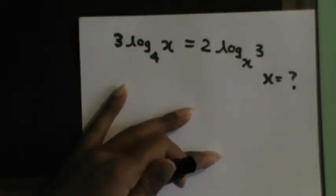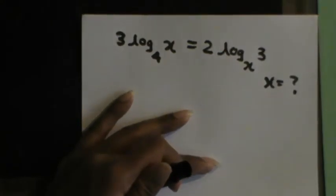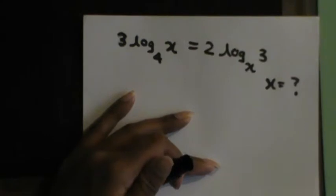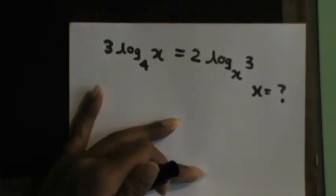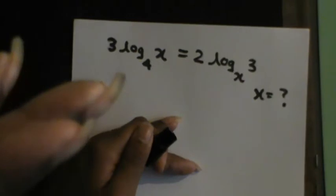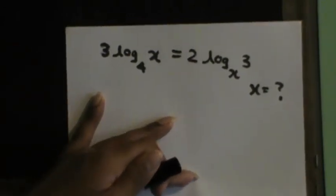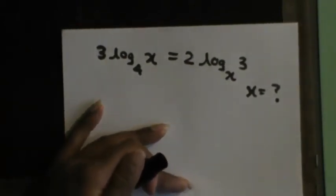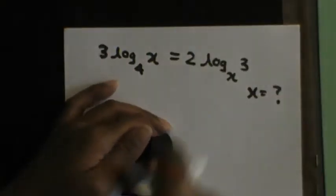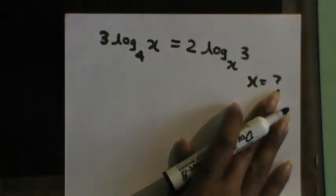Now, in order to apply the theorems, you first have to eliminate these coefficients. I've talked about this in many previous videos. So the first step is to isolate and eliminate these coefficients before applying any other logarithmic theorems.